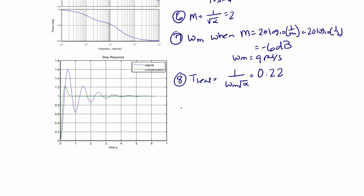Step 9. We're going to use T lead in order to find the zero and pole for the compensator. Z lead is equal to 1 over T lead, so Z lead is equal to 4.5. P lead is equal to 1 over alpha T lead. P lead is equal to 18.